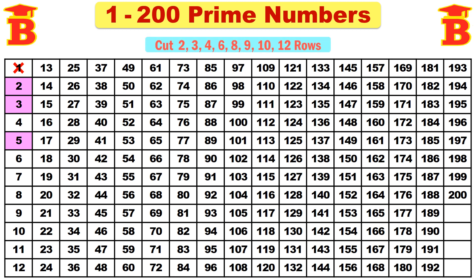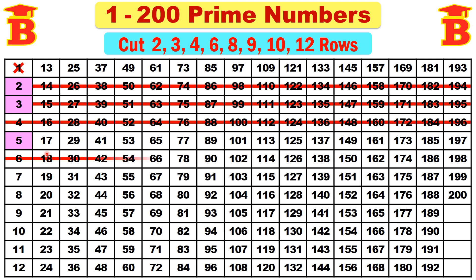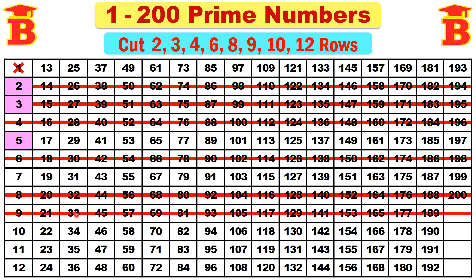Next step: cut the 2nd, 3rd, 4th, 6th, 8th, 9th, 10th, and 12th rows. So this is the 2nd row — strike out this 2nd row. This is the 3rd row — strike out the 3rd row. This is the 4th row — strike out the 4th row full. Then the 6th row, then the 8th row, then the 9th row, then the 10th row, and finally strike out the 12th row.